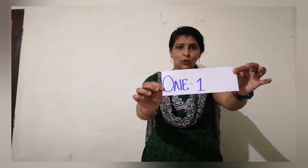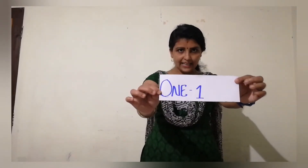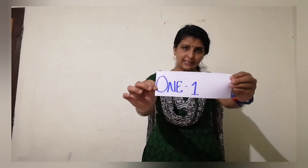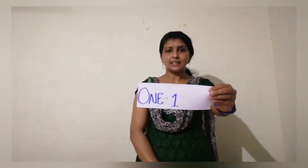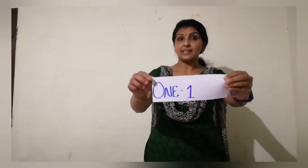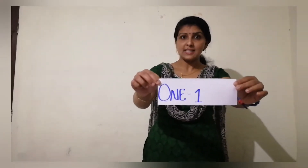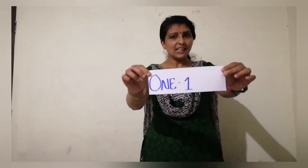Next we can see the number names we studied. What is the number name? 1. Can you say the spelling? O, N, E. 1. Everybody knows, but again we are taking our revision. So you have to say the number name once: O, N, E. 1. Very good.